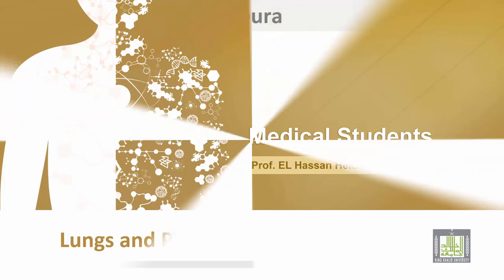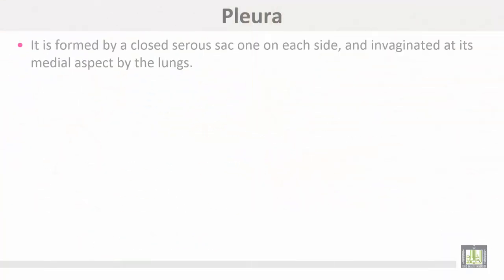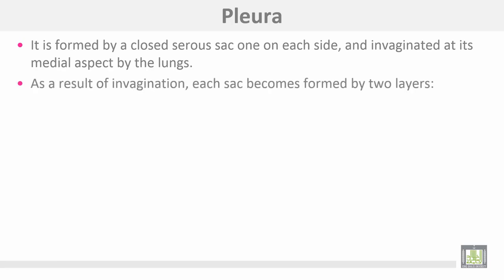Lungs and pleura. It starts by pleura. It is formed by a closed serous sac, one on each side, and invaginated at its medial aspect by the lungs.